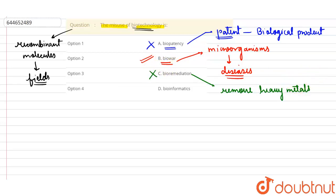The last one is option D: bioinformatics. Bioinformatics is a computer-assisted technology which helps to store a large amount of information. So this is a utilization, not the misuse.